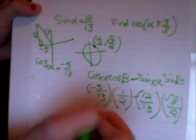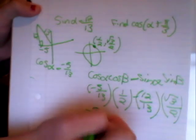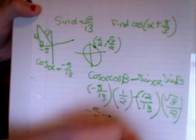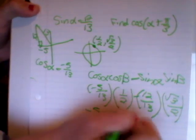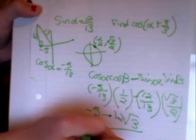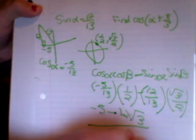Negative 5 times 1 is negative 5, minus 12 times the square root of 3, over 26. Thanks.